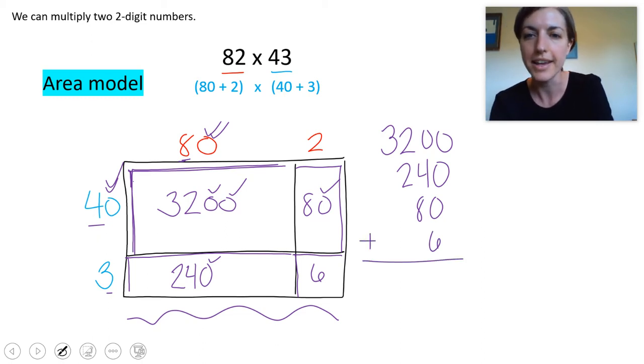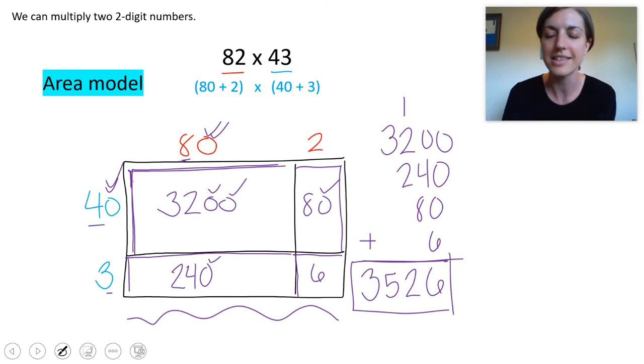In my ones place I have 6. In my tens place I have 12. Carry that one. In my hundreds place I have 5. In my thousands place 3. So 3526 is my answer.